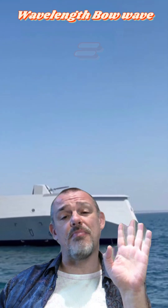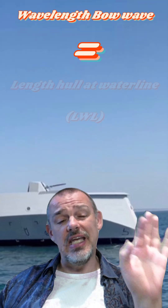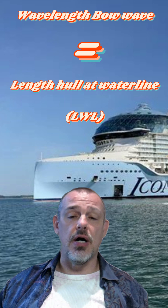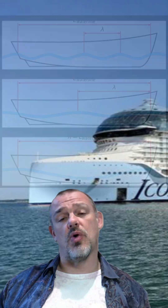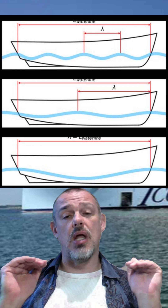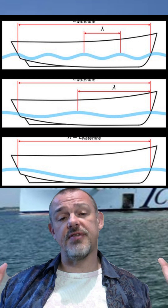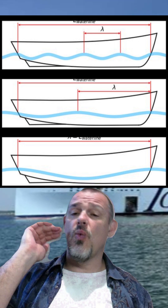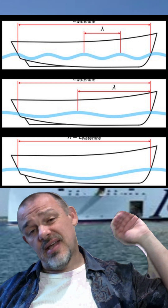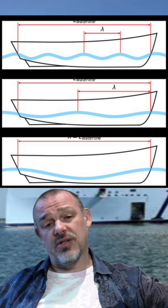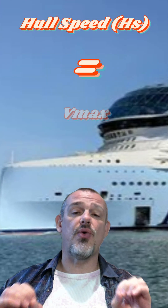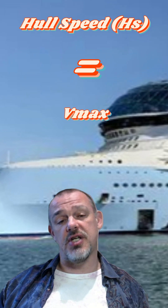This happens when the wavelength of the bow wave equals the ship's waterline length, making it harder to go faster without much more power. At some point, the wavelength will be as long as the length of the ship at the waterline. You will have a wave peak at the bow, a trough in the middle, and again a peak at the stern. This is what we call the hull speed — the theoretical VMAX of a ship.